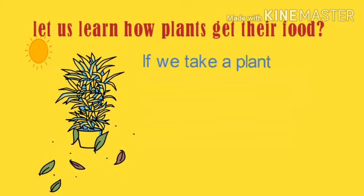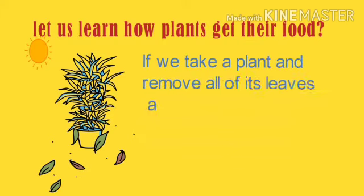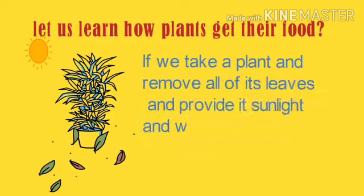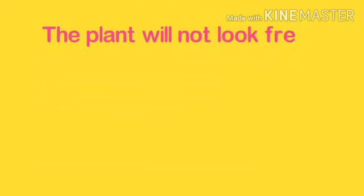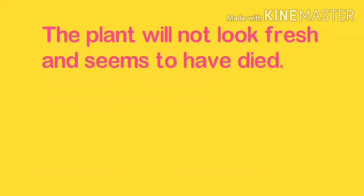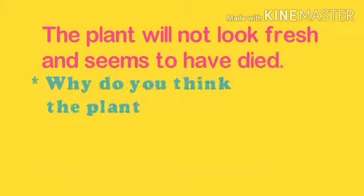If we take a plant and remove all its leaves and provide it with sunlight and water, what will happen with the plant? It is very simple. Let me tell you: the plant will not look fresh and seems to have died. Now what's the reason behind that?